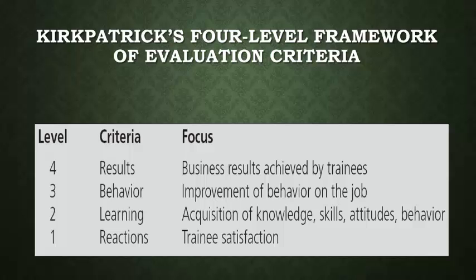Any effective training program would meet all four of these levels. It would start at level one, where trainees are satisfied with the training session, move into level two where trainees actually learn or acquire knowledge, skills, attitudes, or behaviors, which leads to level three and an improvement of behavior on the job, which then leads to level four where the business receives a return on investment. Under this framework, you should not move on to the next level unless there has been a positive result. Ideally, the higher the level, the greater the impact on the results.